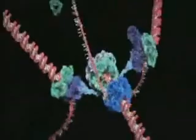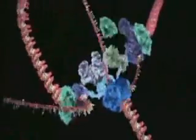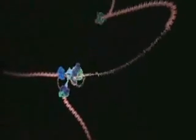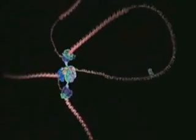Things are not so simple for the other strand because it must be copied backwards. It is drawn out repeatedly in loops and copied one section at a time. The end result is two new DNA molecules.